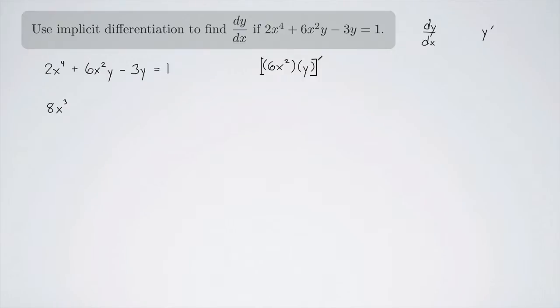So product rule says we take the derivative of one of them, say the first one, put a little prime there, leave the second one alone, plus leave the first one alone, and take the derivative of the second one.